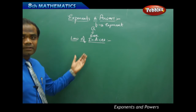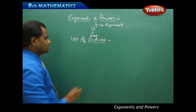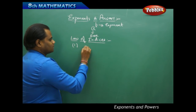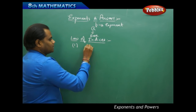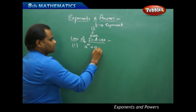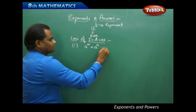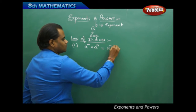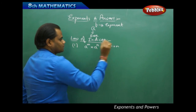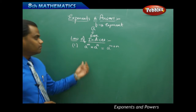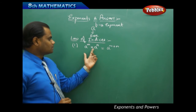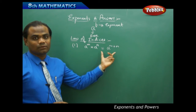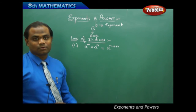The first law of indices states that when I multiply a power m into a power n — where the bases are the same — the result is a power m plus n. So under multiplication, when the bases are the same, the powers are added.